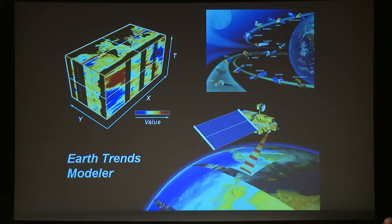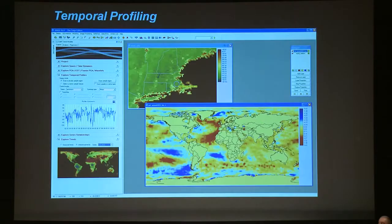It refers to a wide range of satellite platforms and their instruments designed by NASA and their counterparts in other countries as part of what's called the Earth Observing System. These systems gather data in this basic form — a space-time cube — with the traditional image dimensions of X and Y, plus time.